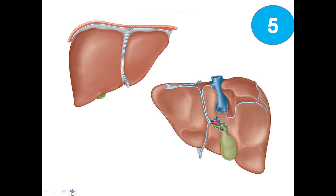We got here the anterior and posterior view of the liver. Let's see — more superiorly we can see the diaphragm. Here we go the left lobe, here we go the right lobe, this is the falciform ligament. This is the caudate lobe.